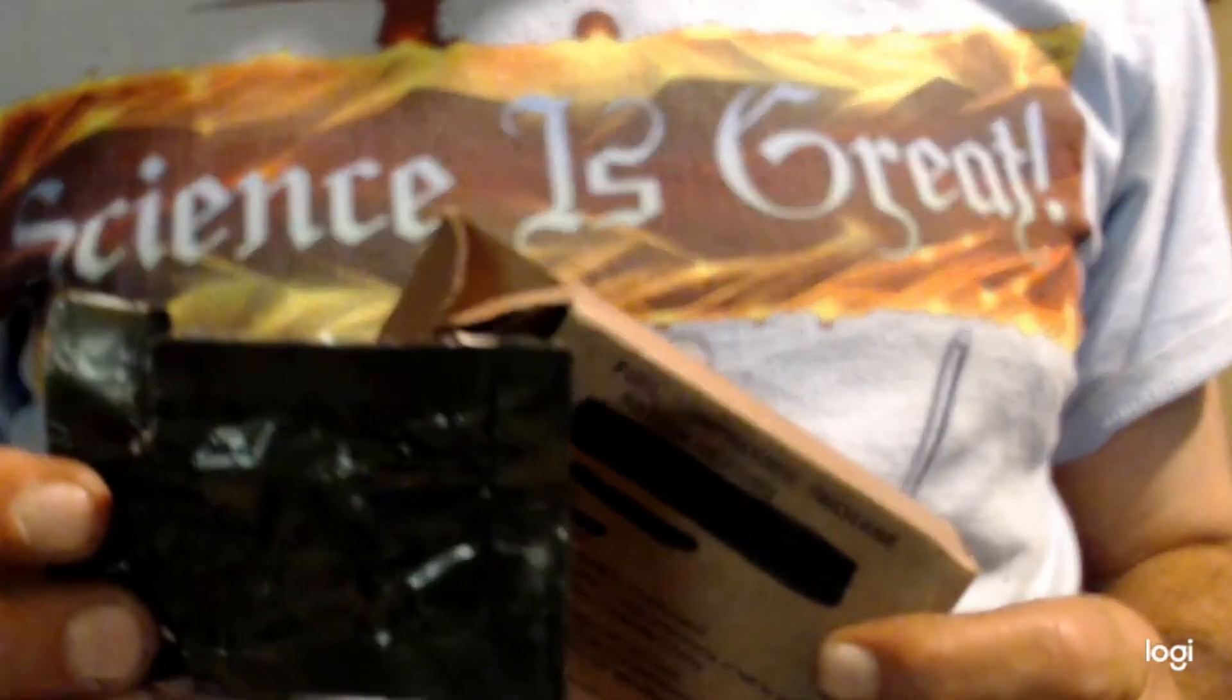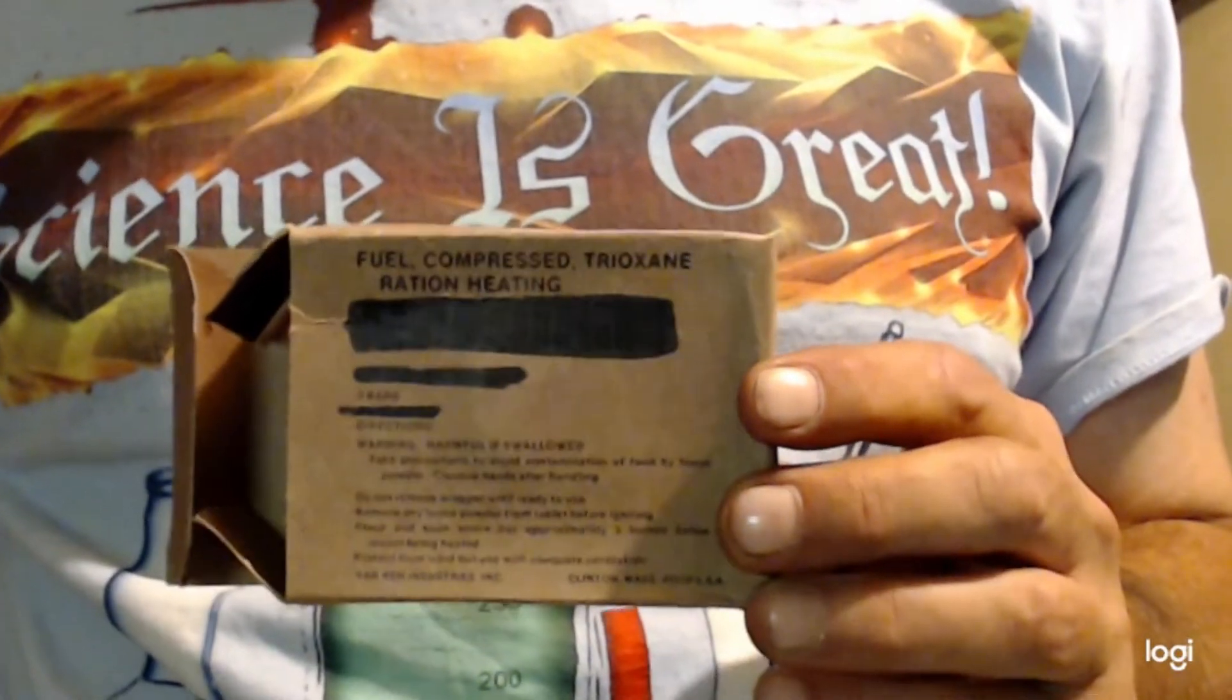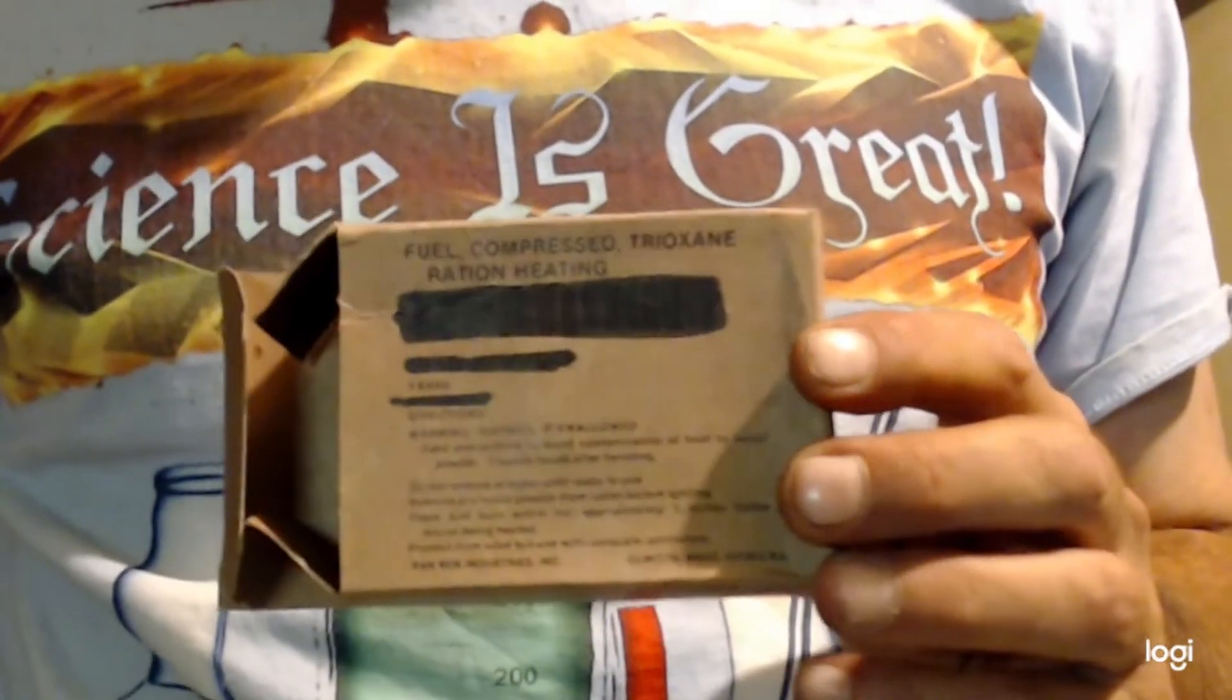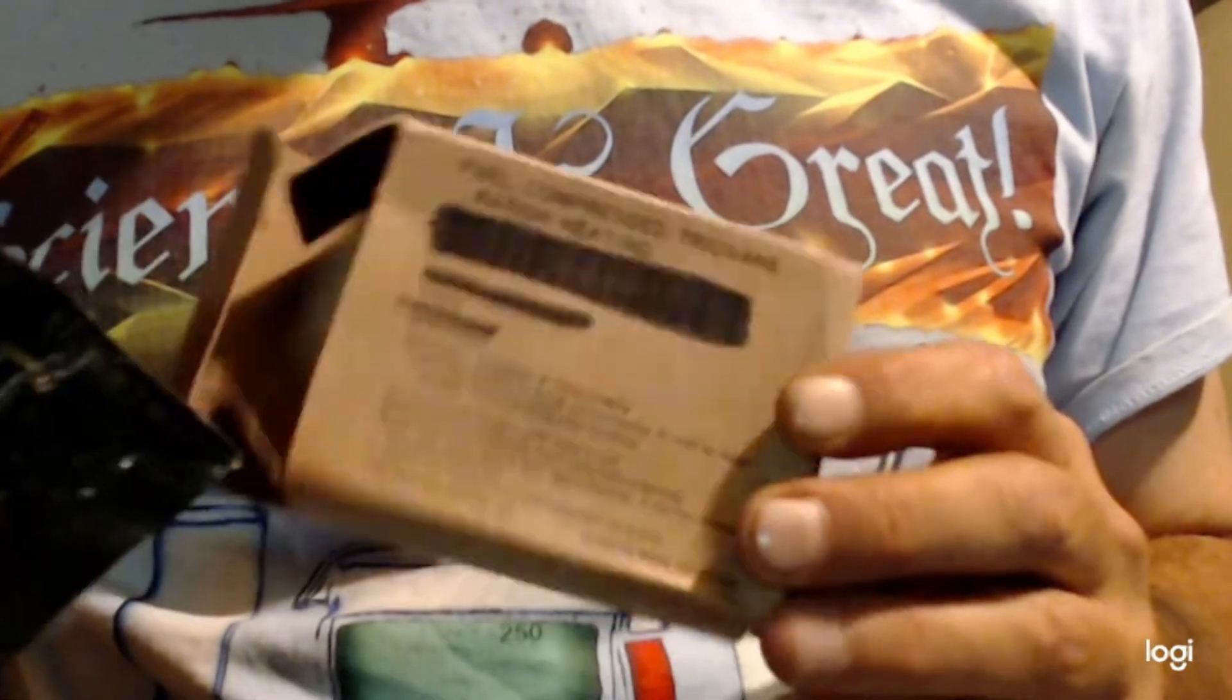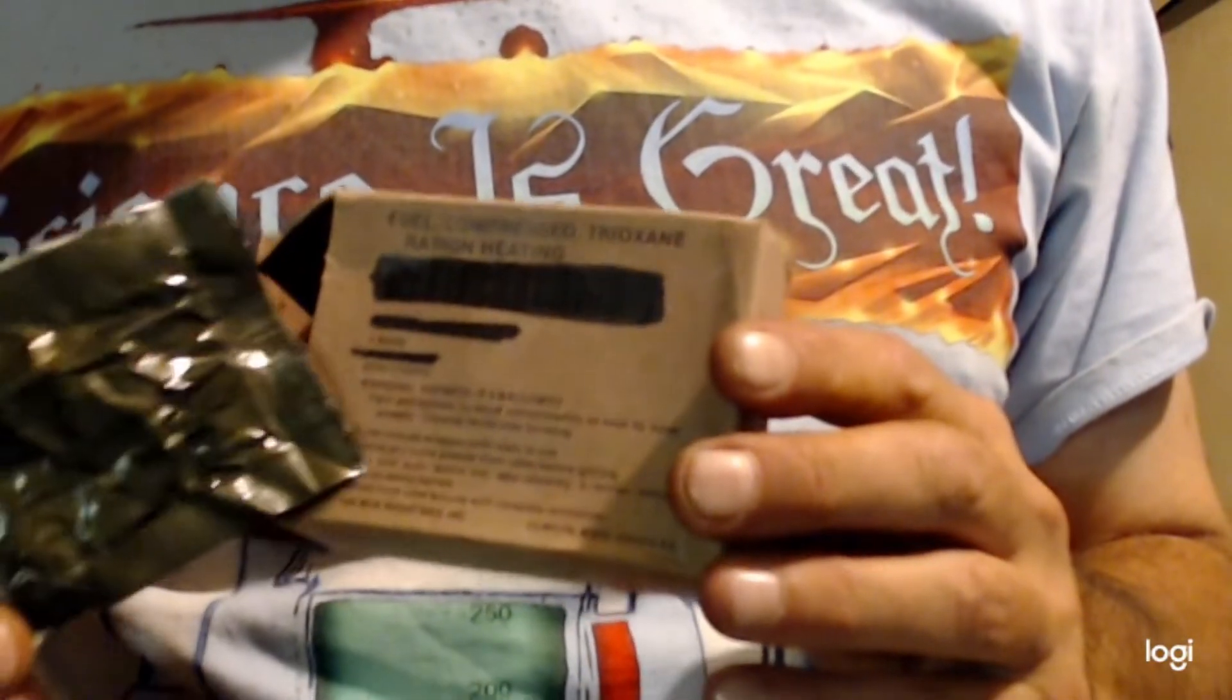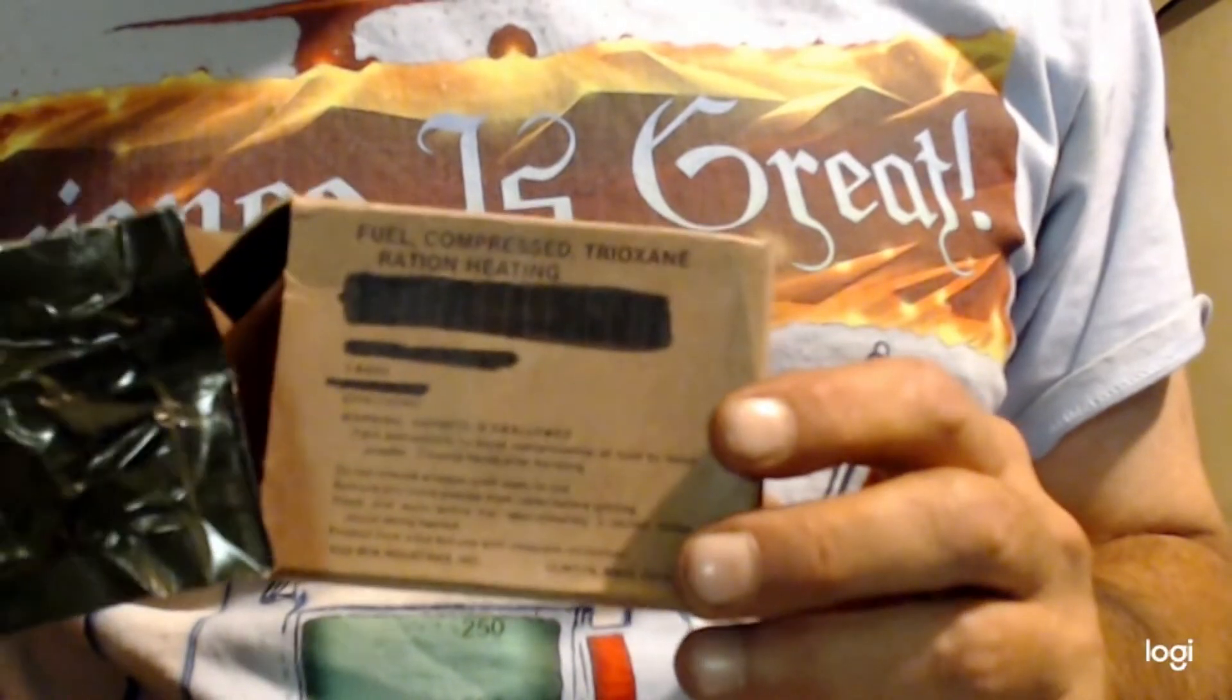They come in these packages. You can get these anywhere. They're just for survivalists, especially right now with Biden. People need survivalist stuff, that's for sure. So you can buy as much as you want of this. They probably have them in army supply stores and at Walmart in the camping section, and obviously on eBay and Amazon.